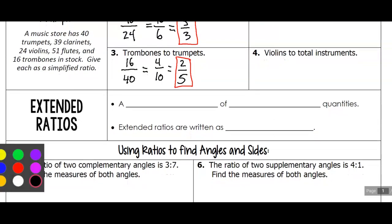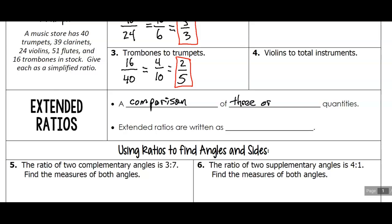So sometimes we'll talk about extended ratios. Extended ratios is a comparison of three or more quantities. For extended ratios, we'll write it as a to b to c, because we wouldn't really write a fraction with two fraction bars in it. You could write it out in words as a to b to c using the word to.